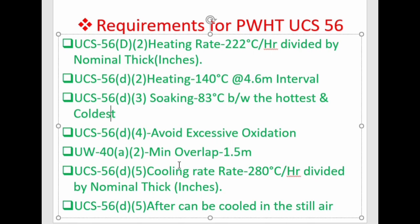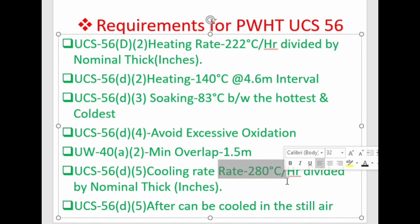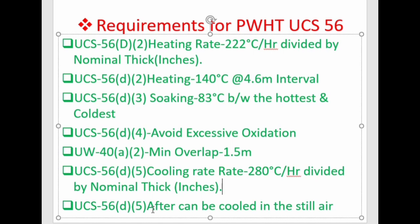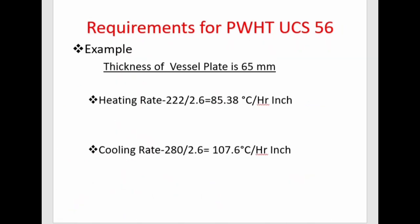The code restricts the cooling rate — the maximum cooling rate shall be restricted to 280°C per hour. To obtain the cooling rate, divide 280°C per hour by the nominal thickness of the vessel in inches. The last statement in UCS-56 D5 is that after 425°C, the vessel may be cooled in still air. The controlled cooling takes place in the furnace down to 425°C, and below that the vessel can be cooled in still air.